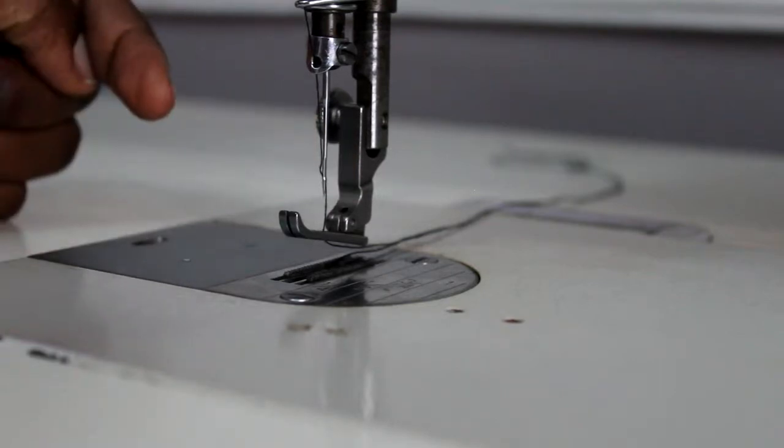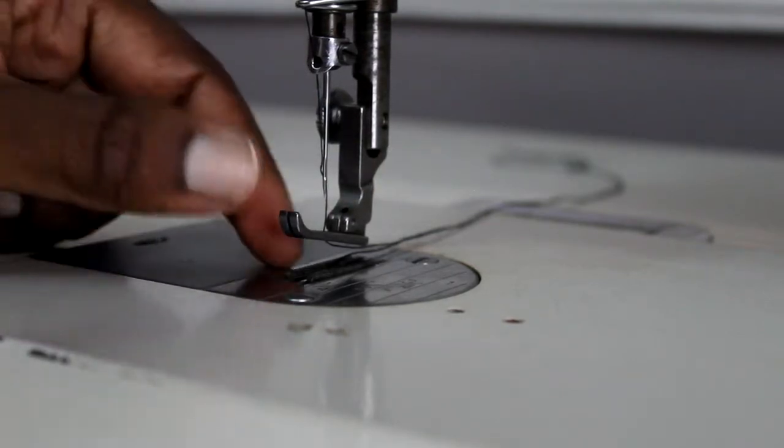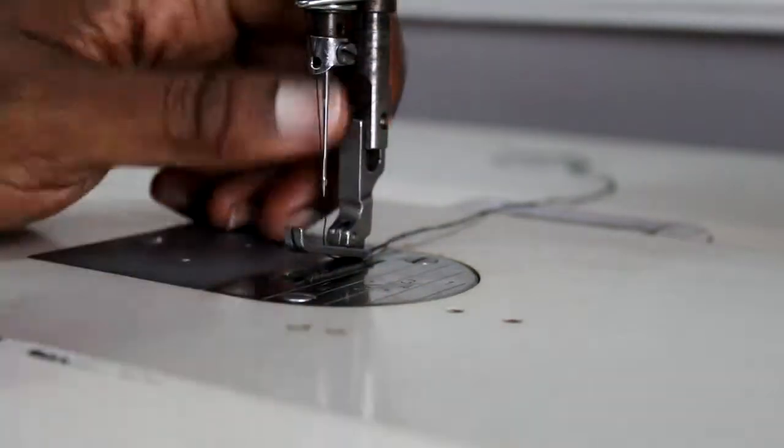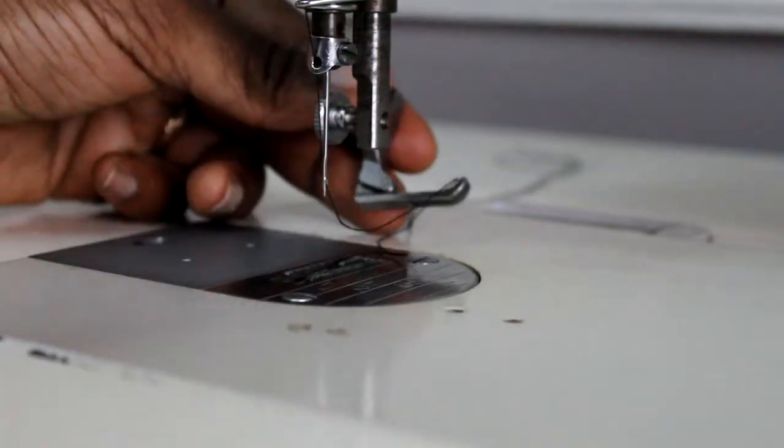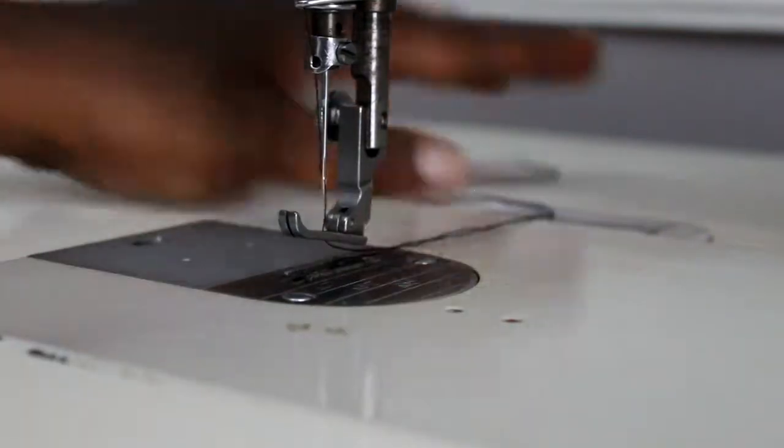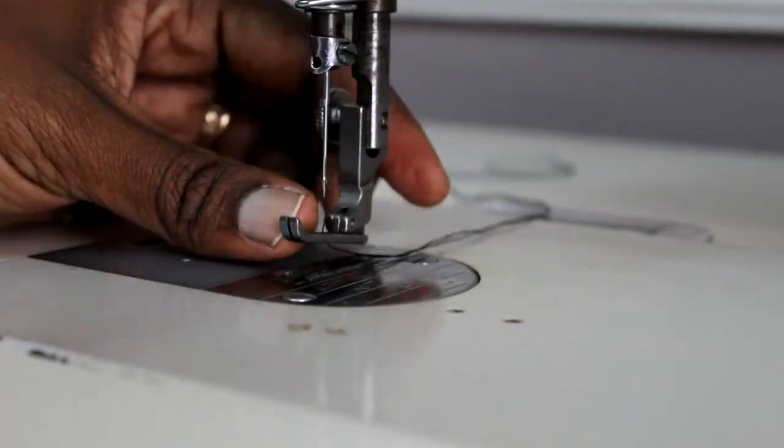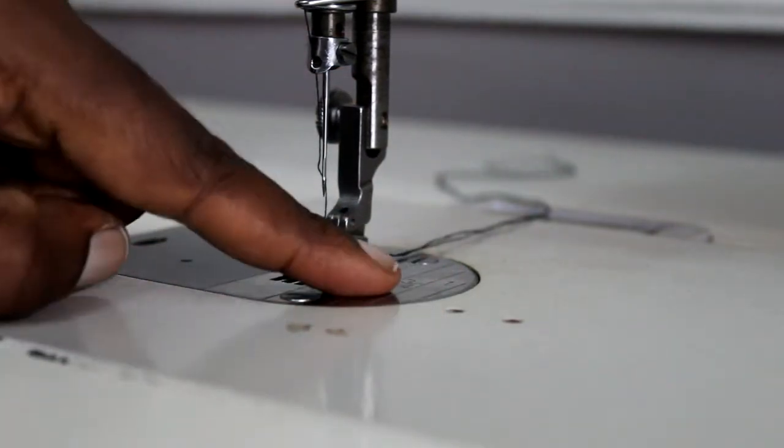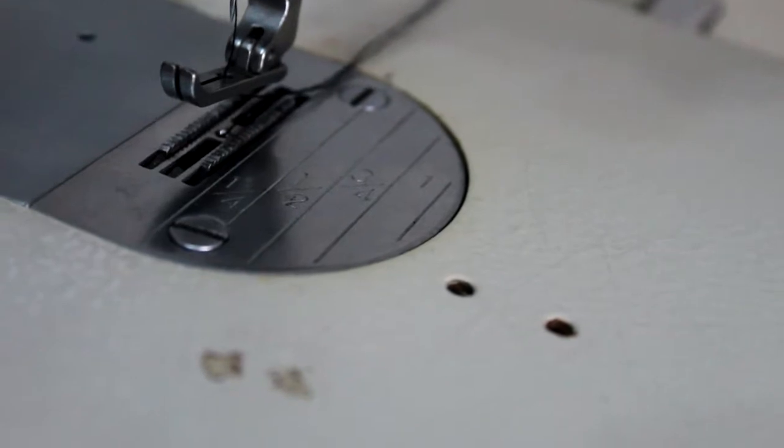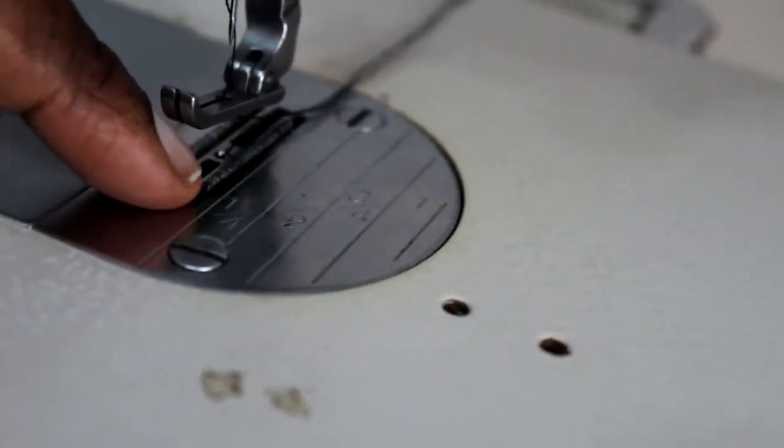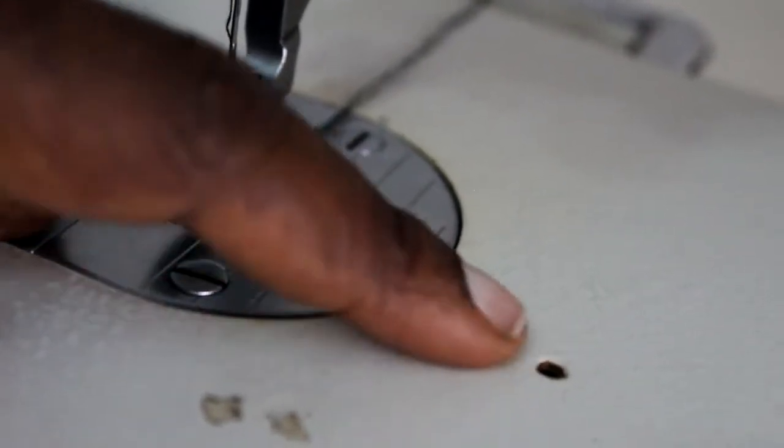This is the needle with threads from left to right. The presser foot—like most machines you can take the presser foot off and switch it to different ones for different functions. This is your needle plate and your feed dogs on the needle plates. You have your seam guidelines. This is on most machines but not all machines.